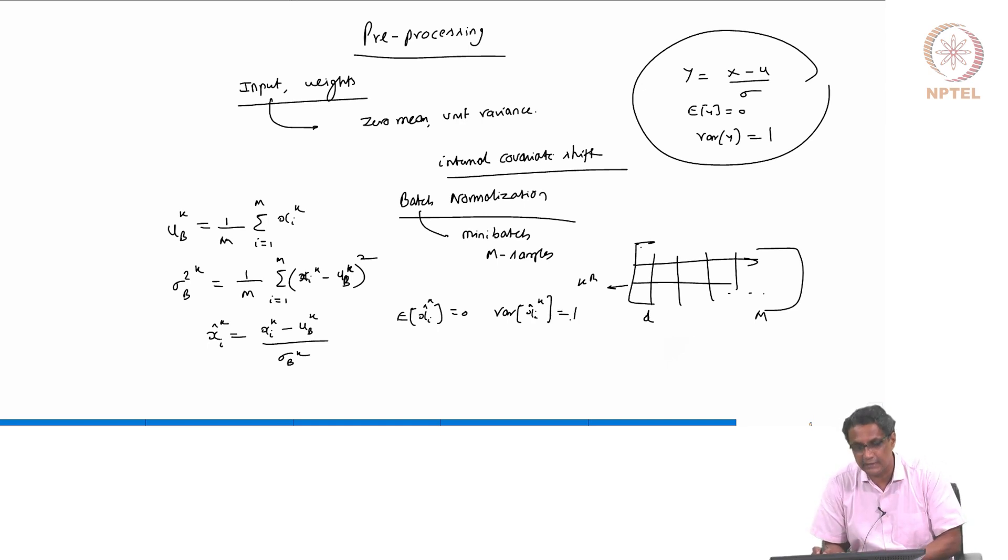And also what is done is, as a learnable parameter, people do not just leave it at this because the problem is, if the network actually did not want this, let's say you are forcing it now, you are saying that this is what I want, I will force, but to just give an allowance on top of this, what is typically done is, we actually let the network learn two parameters per element. So if you have d dimension, that means 2d additional parameters which come in the form like you will have like gamma_k times x_i_hat_k plus beta_k. Now, this gamma_k and beta_k are again learnable.